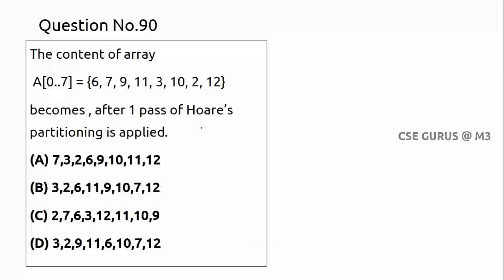Coming to question number 90. The contents of the array — it is given — become what after one pass of Hoare's partition is applied? Hoare's partition is simply used for quicksort. In quicksort we select a pivot element and partition around it. Hoare's method always takes the first element as the pivot element and proceeds with the quicksort partitioning.